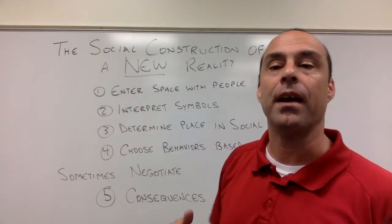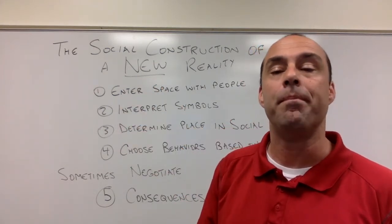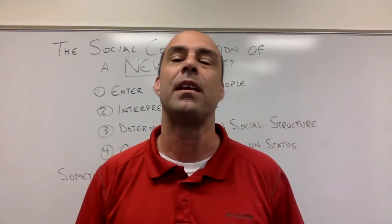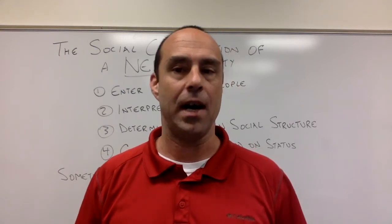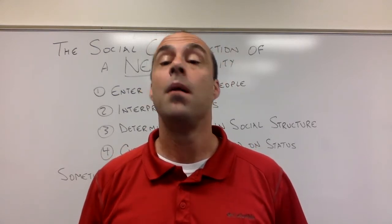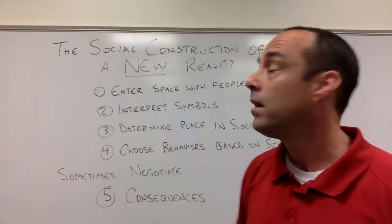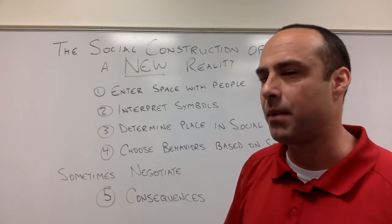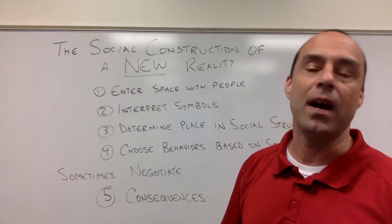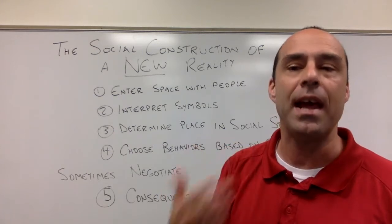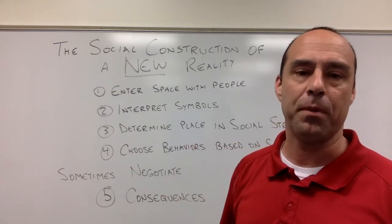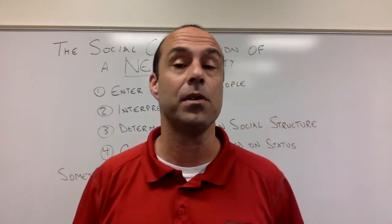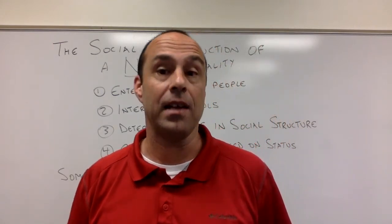Quick review of the social construction of reality. What I would want you guys to think about right now is the fact that almost all of the time, this whole thing goes off seamlessly because we all agree. We all define things in the same way. We all are oriented basically in the same way by the collective consciousness. We define where we are in similar ways. Almost every day, things go off pretty seamlessly — and in which case, if things are going off seamlessly, society is staying stagnant.